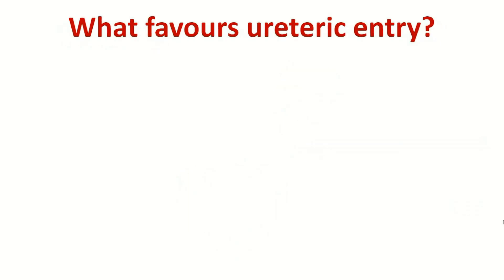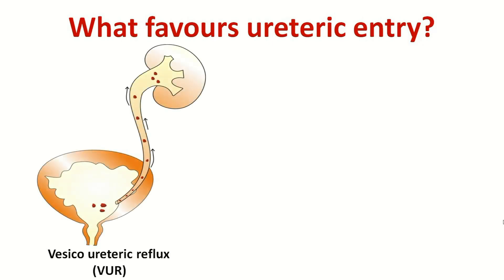What favors the entry of bacteria into the ureter? Obviously, if you have some kind of incompetence of the ureter orifice — this condition is called vesicoureteric reflux — a certain amount of urine with every act of voiding goes up into the ureters. When urine goes up into the ureter, bacteria also go up and can reach any height: lower ureter, middle ureter, renal pelvis, the calyces.